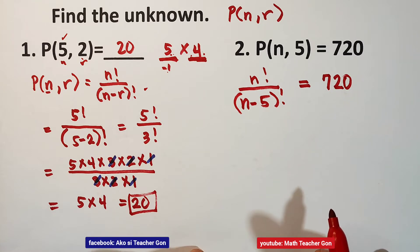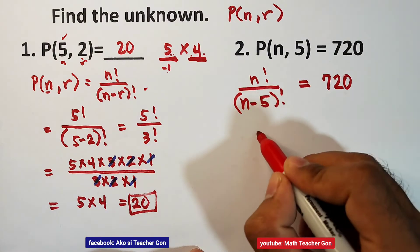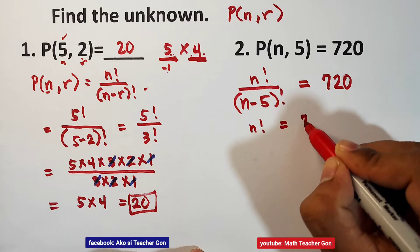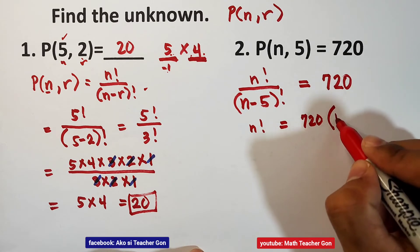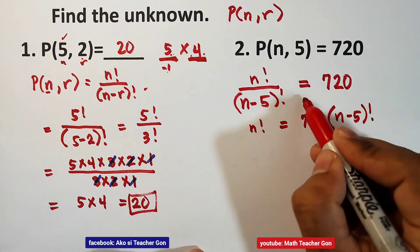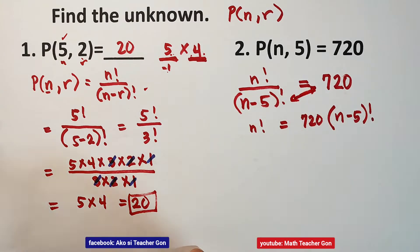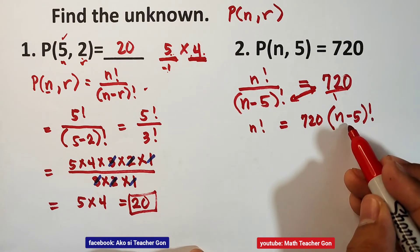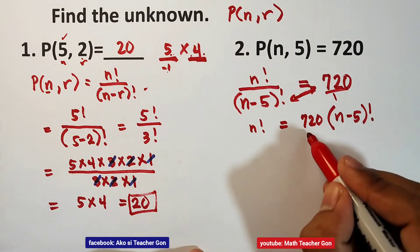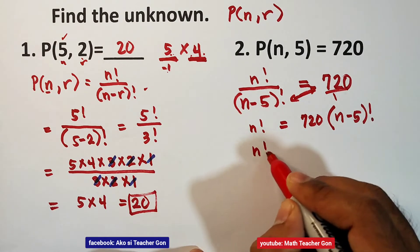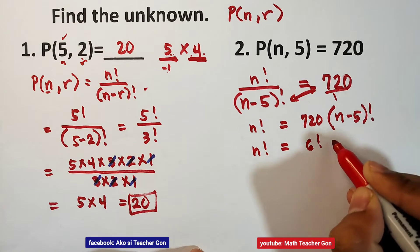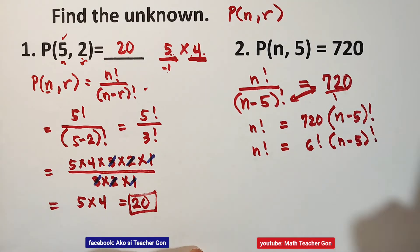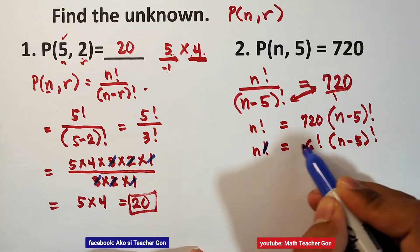Now let us cross-multiply. So n factorial equals 720 times n minus 5 factorial. We recognize that 720 is equal to 6 factorial, so we have n factorial equals 6 factorial times n minus 5 factorial.